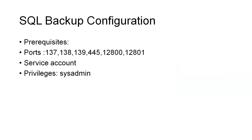Next we'll learn about SQL backup configuration. For SQL backup configuration we have a few prerequisites for ports. The firewall ports should be open between the Rubrik cluster and the DB host. The ports are 137 and 138, which are UDP ports. Then 139 and 445 are TCP. 10800 and 10801 are TCP as well.